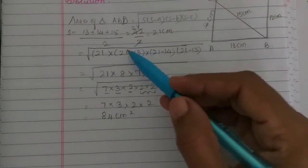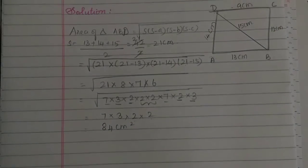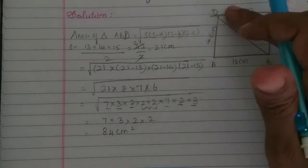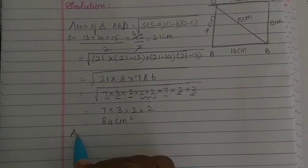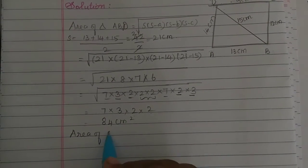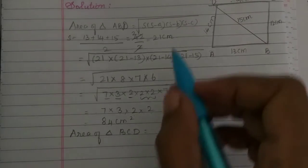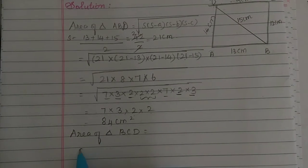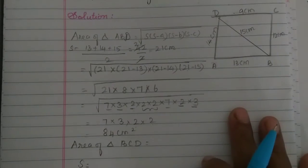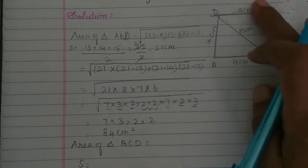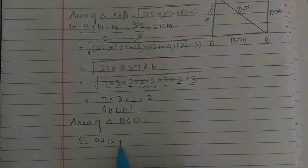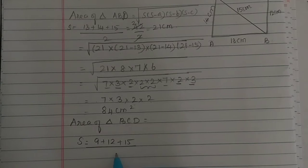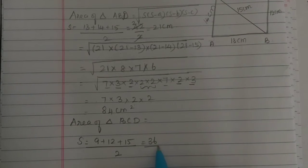Now, the area of triangle ABD is confirmed. Next we find the area of triangle BCD. For triangle BCD, S is different — it is not the same as before. S equals 9 plus 12 plus 15 divided by 2, which equals 36 divided by 2, which is equal to 18 centimeters.